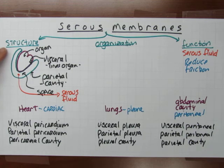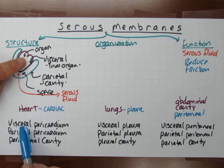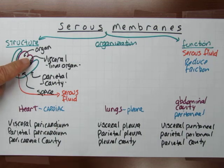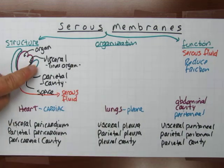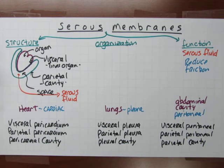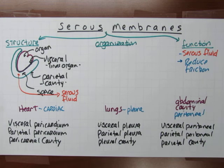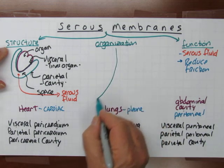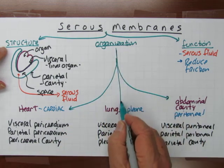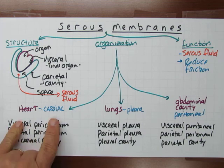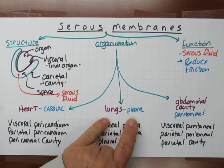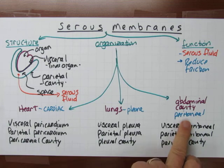So we've gone from structure to function to organization. The basic structure of all serous membranes consists of an organ with two layers of membranes: one layer directly attached to the organ — that's the visceral layer — and one layer lining the cavity the organ is in — that's the parietal layer. The space holds the serous fluid, whose function is to reduce friction and help protect the organ. You'll find serous membranes around the heart, around the lungs, and around the organs in the abdominal cavity.